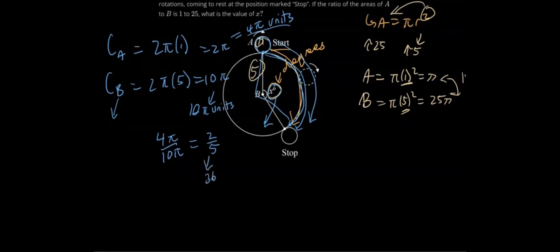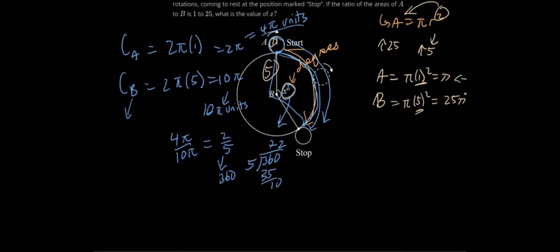We need this bottom number here to be 360. So let's say 360 divided by 5 to find our scale factor. We can put this in here. So we get 35, we have 10. So our scale factor here is 72. Let's multiply the bottom and the top of this fraction by 72. And we're going to get 144 over 360.